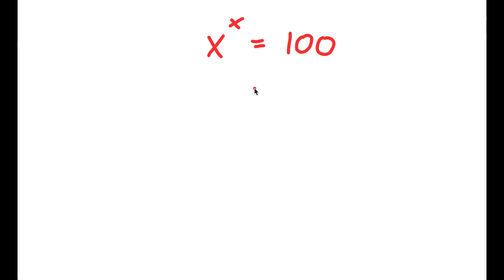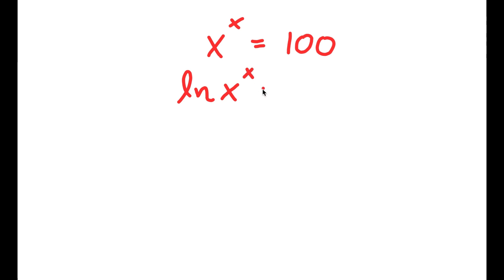In this problem, I have x to the power of x is equal to 100. I'm going to first start by taking the natural log, or ln, on both sides. So I have ln of x to the power of x is equal to ln 100.